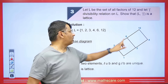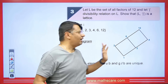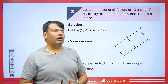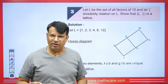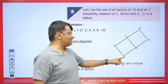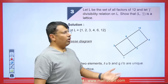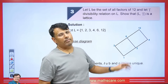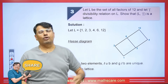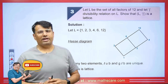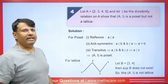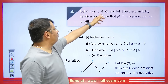Taking elements 2 and 3: the upper bounds are 6 and 12 (4 is not related to 3). The least upper bound is 6, which is unique. The lower bound is 1, which is unique. For any two elements, the least upper bound and greatest lower bound are unique — this diagram is a lattice.